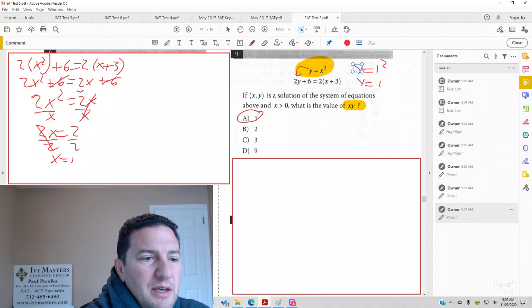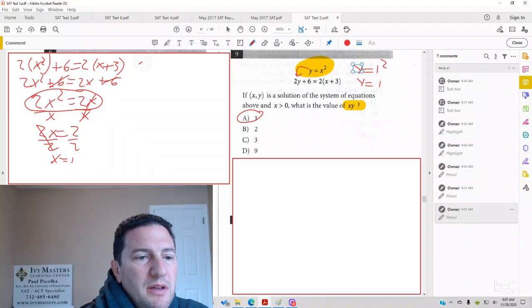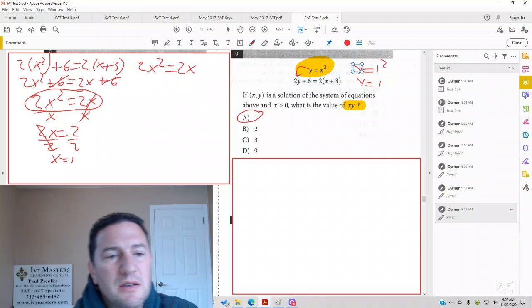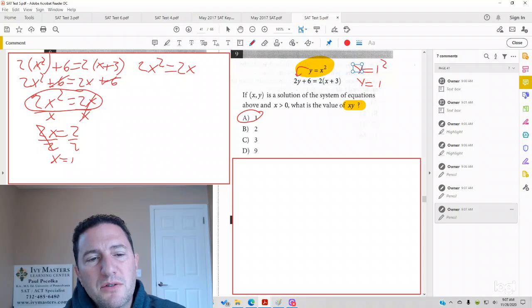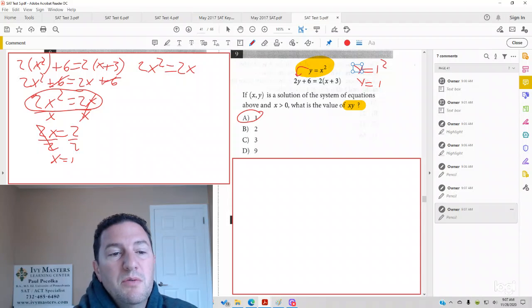Now, one thing that you want to keep in mind is if you do this step right here, I'm going to write that over again, 2x² equals 2x. The method that we just used, you actually don't see one of the answers. And you might be able to eyeball it and say, hey, if x is 0, then both sides are equal as well.